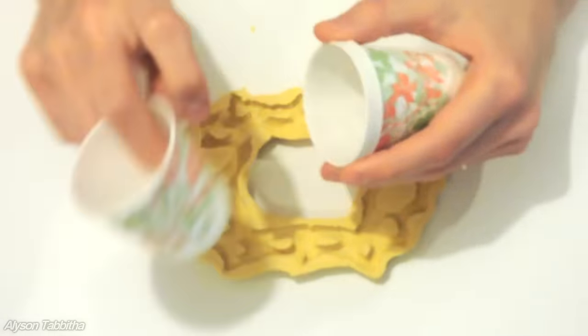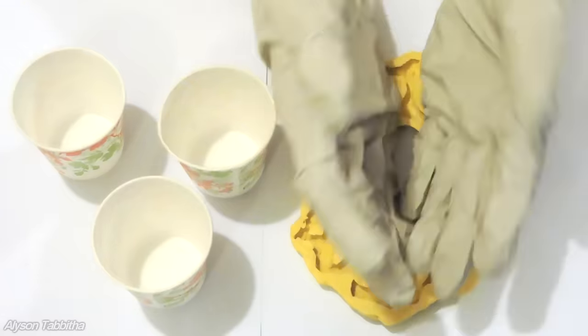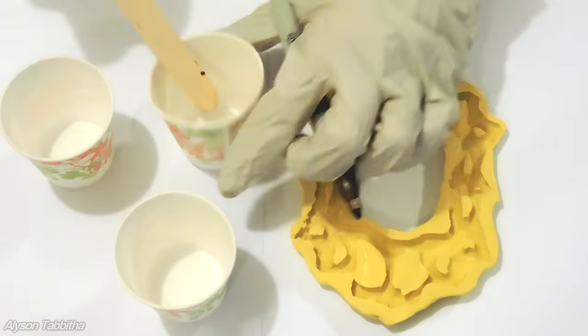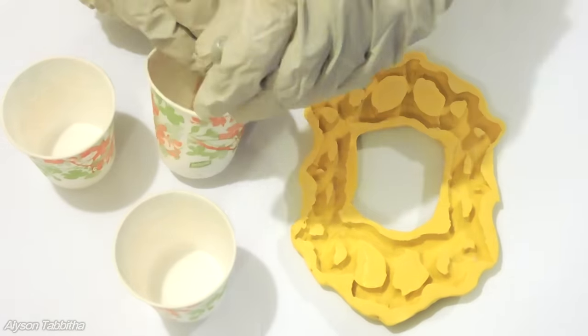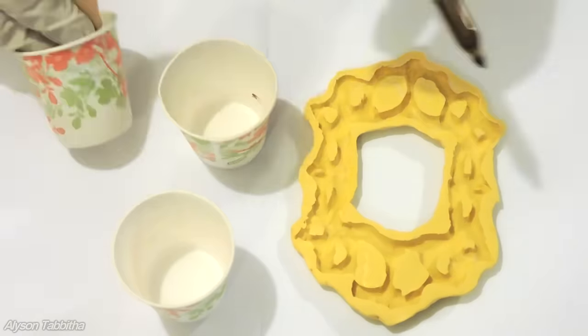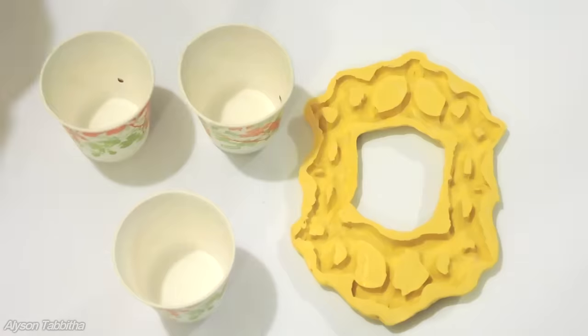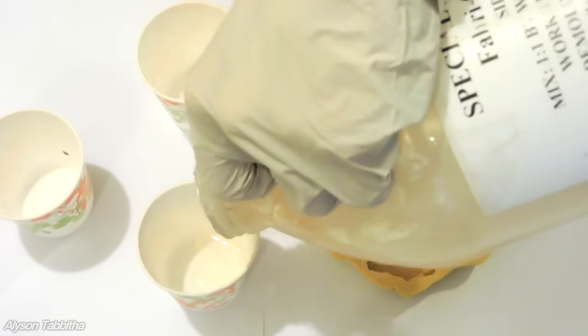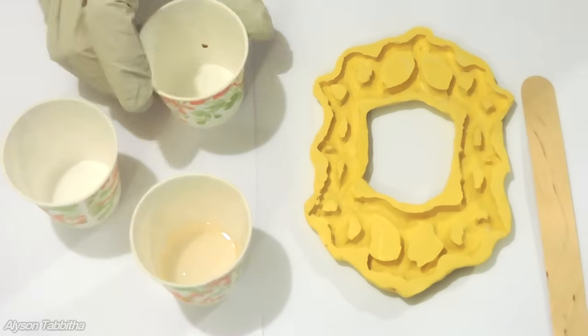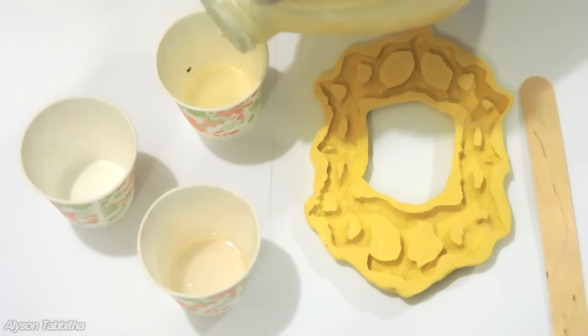Get three disposable cups and put on a pair of gloves to protect your hands from any chemicals. To measure, I like to mark a popsicle stick then use it to mark the inside of the two cups. When you have them marked, you can pour resin part A into one and part B into another, measuring equal parts.